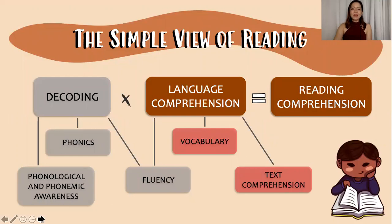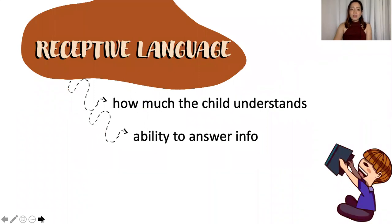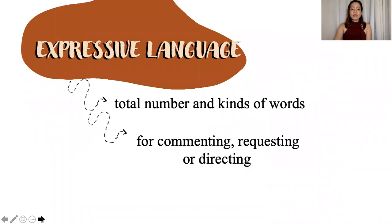When we talk about language comprehension, it deals with the receptive language and expressive language. Receptive language is about how much the child understands the information given to him. It includes his vocabulary, his ability to follow instructions, and his ability to answer questions. Expressive language deals with the total number of words the child uses. It also talks about the kinds of words they use, such as nouns, actions, descriptives, locations, etc. Moreover, it is how the child uses his words. It could be for commenting, requesting, or directing.